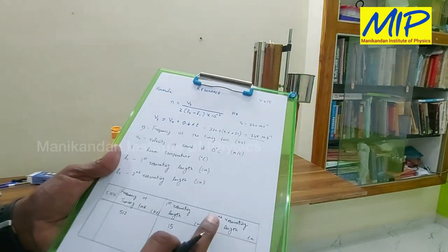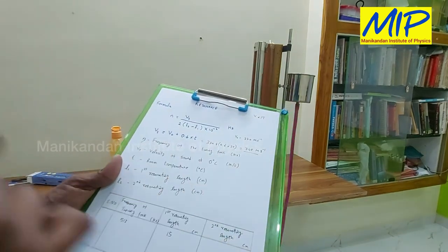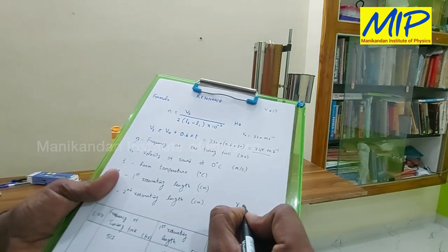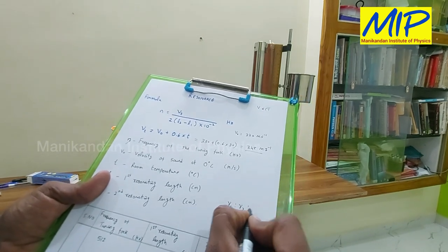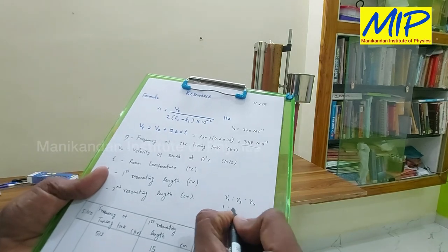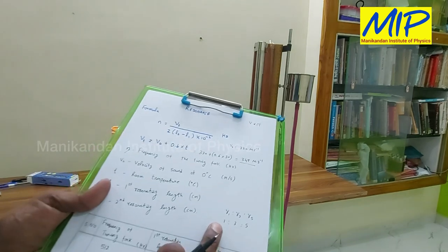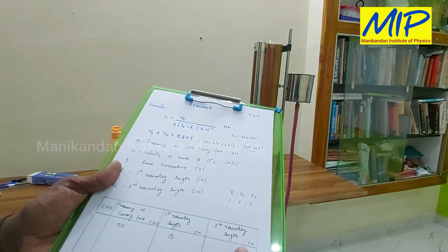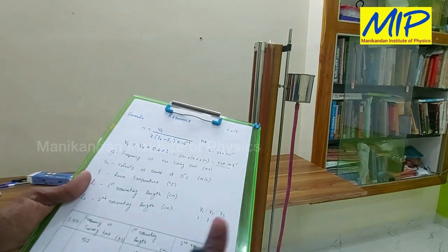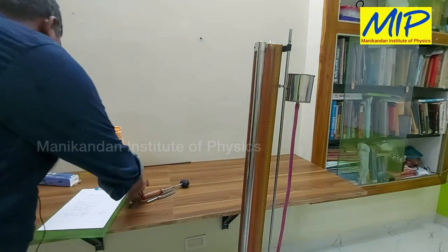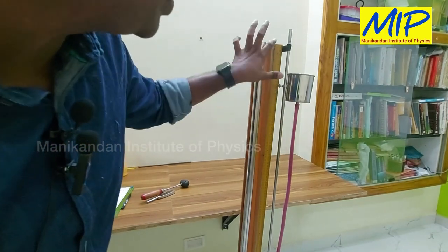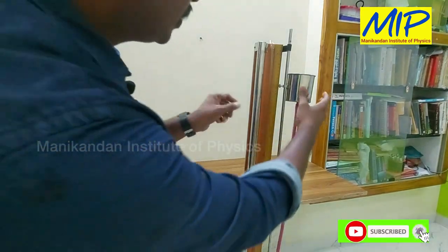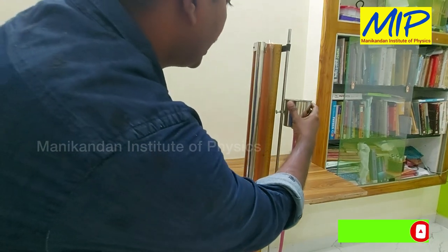The second resonating length is three times the original value because this is a closed organ pipe. For a closed organ pipe, the frequency ratios are 1:3:5. So the first resonating length corresponds to the fundamental, the second resonating length is three times, and the third is five times the first value. Since my first resonating length is 15 centimeters, 3 into 15 is 45. So near 45 centimeters I will get the second resonating length.